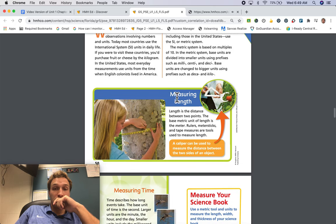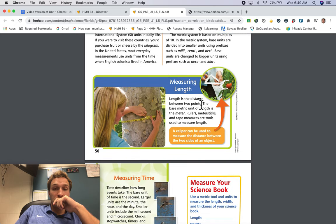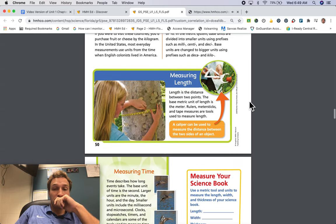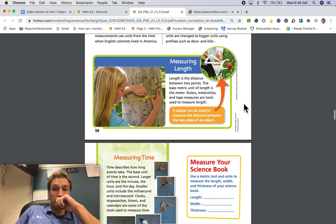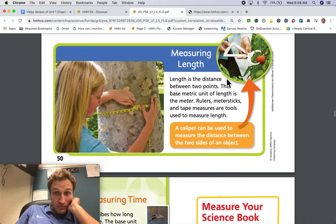Measuring length. Length is the distance between two points. The base metric unit of length is the meter. Rulers, meter sticks, and tape measures are tools used to measure length. A caliper can be used to measure the distance between the two sides of an object.